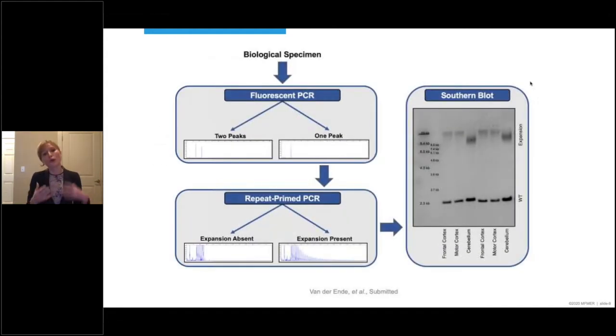This is a summary of what I've shared with you today, our protocol, basically. So you start with the DNA sample, and you perform a fluorescent PCR. If you see two peaks, no additional tests are warranted. If, however, you see a single peak, you should perform a repeat-primed PCR, which either does or does not reveal a characteristic stutter pattern. If you do see this pattern, you should subsequently do a southern blot that confirms the presence of the repeat expansion and allows you to size it as well.